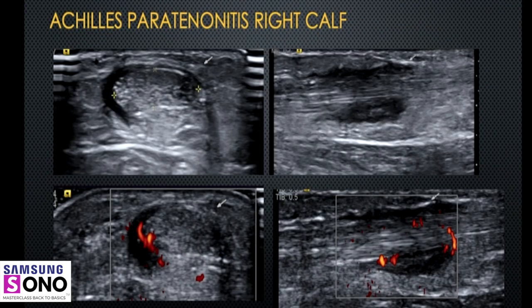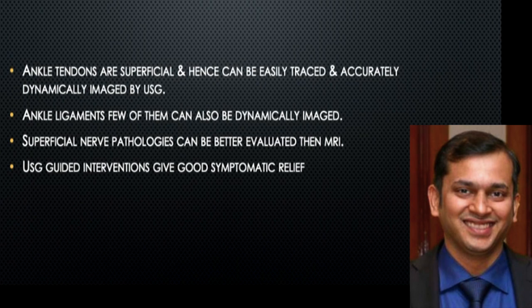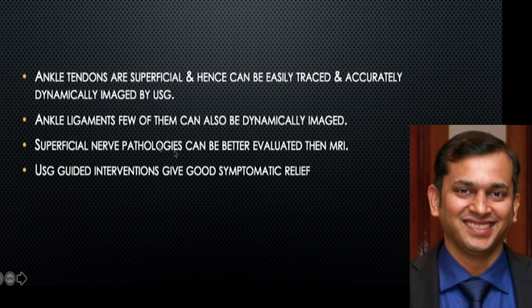The Achilles tendon does not have a synovial sheath; instead it has a paratenone, which provides blood supply to the tendon. When the paratenone gets inflamed, the patient gets severe pain along the mid-calf level along the tendon, and you see hypoechoic tissue representing inflamed paratenone. In summary, ultrasound of the ankle is predominantly a targeted examination, and with dynamic examination, you can image ankle tendons and ligaments very well.